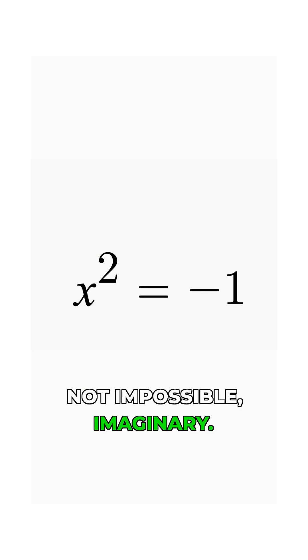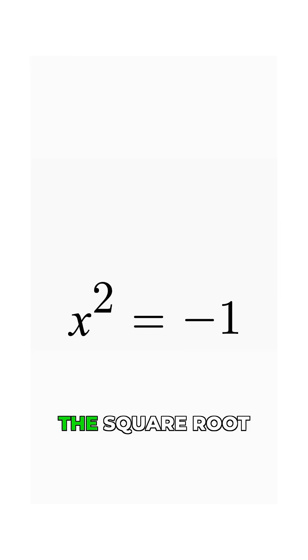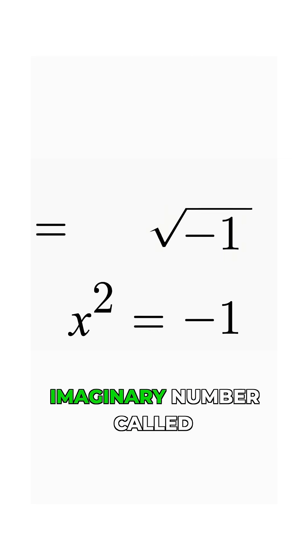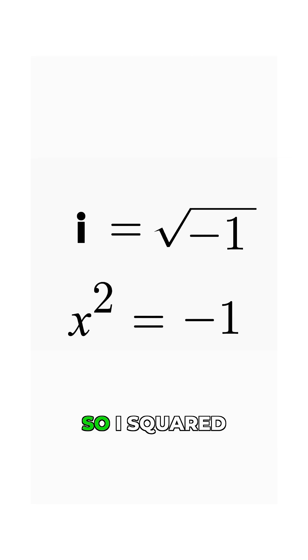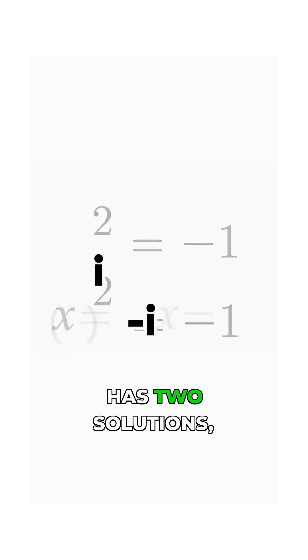Not impossible. Imaginary. Excellent sampling. So basically, mathematicians invented the square root of minus 1 and said it's an imaginary number called i. So i squared equals minus 1. And minus i squared also equals minus 1. x has two solutions, see?